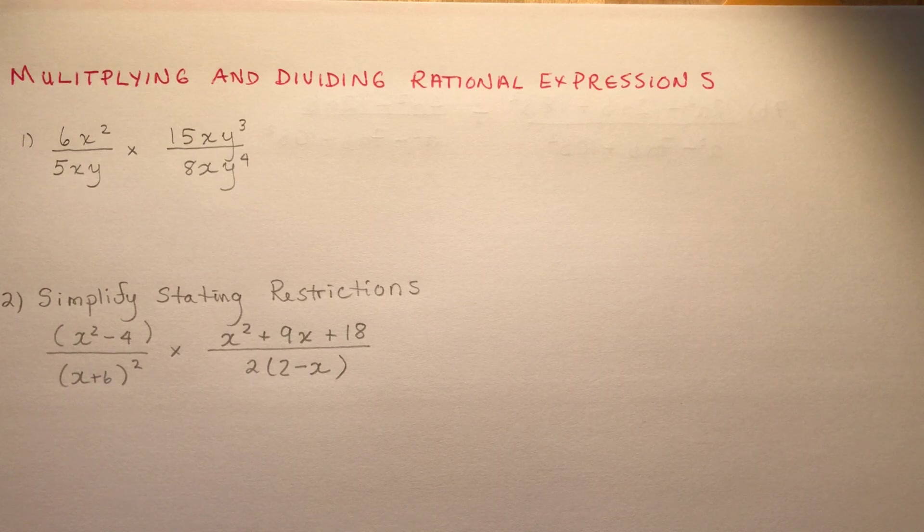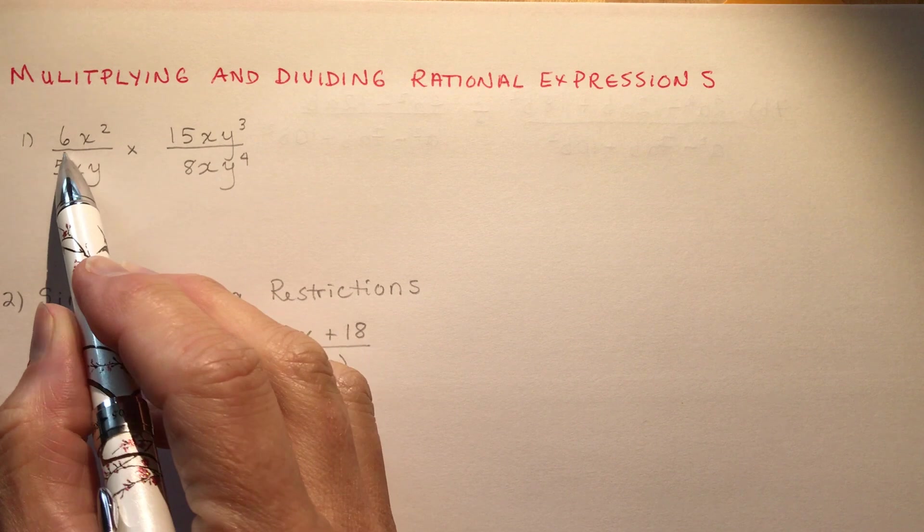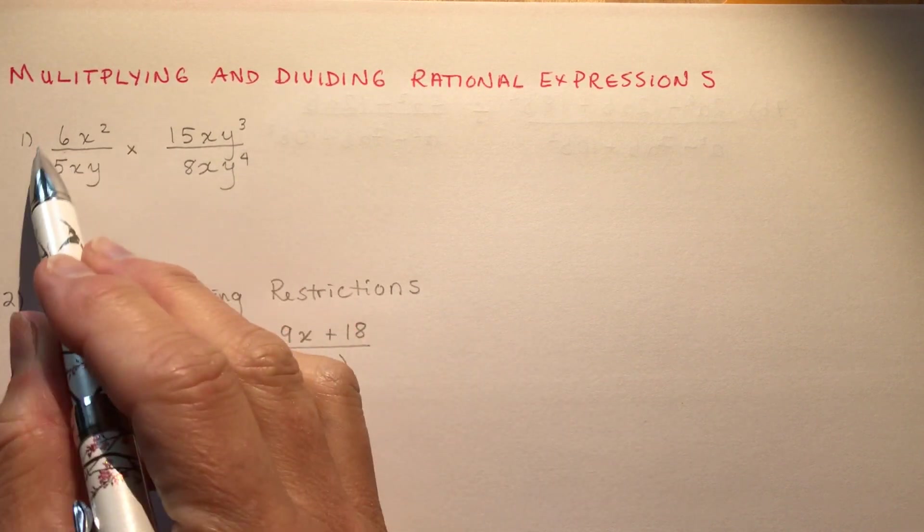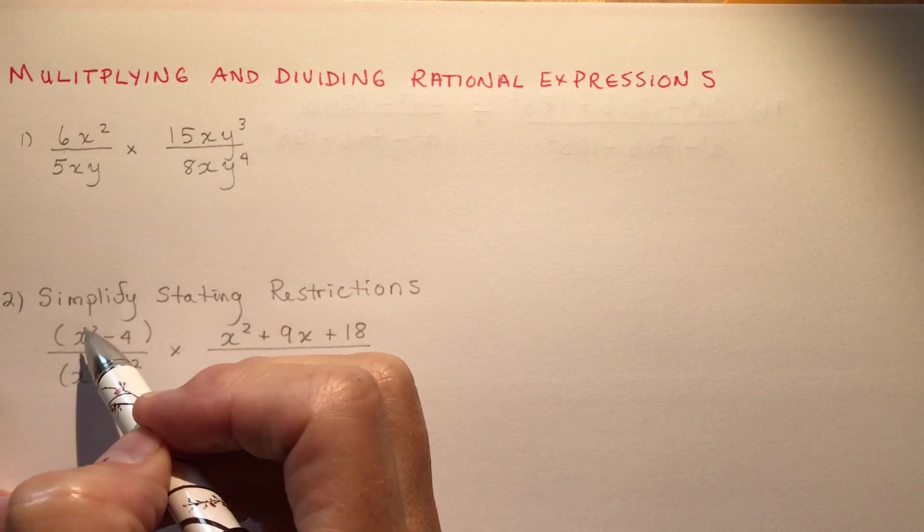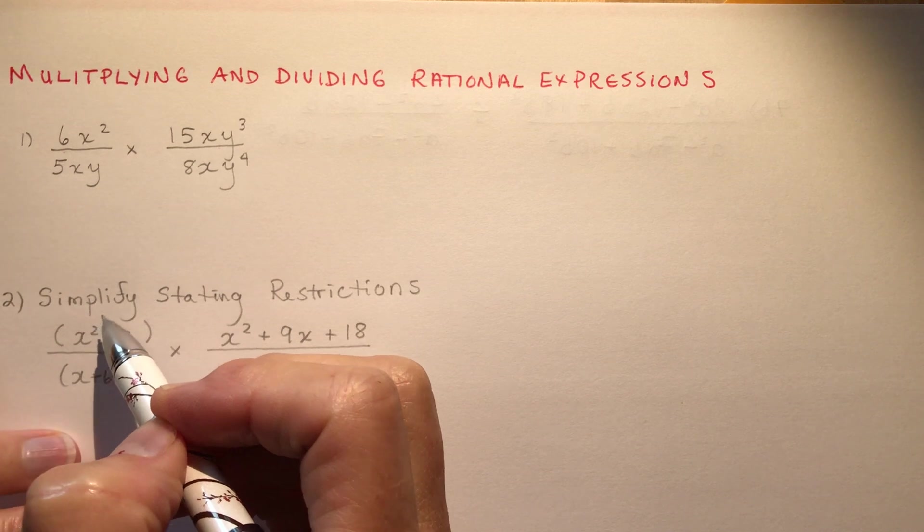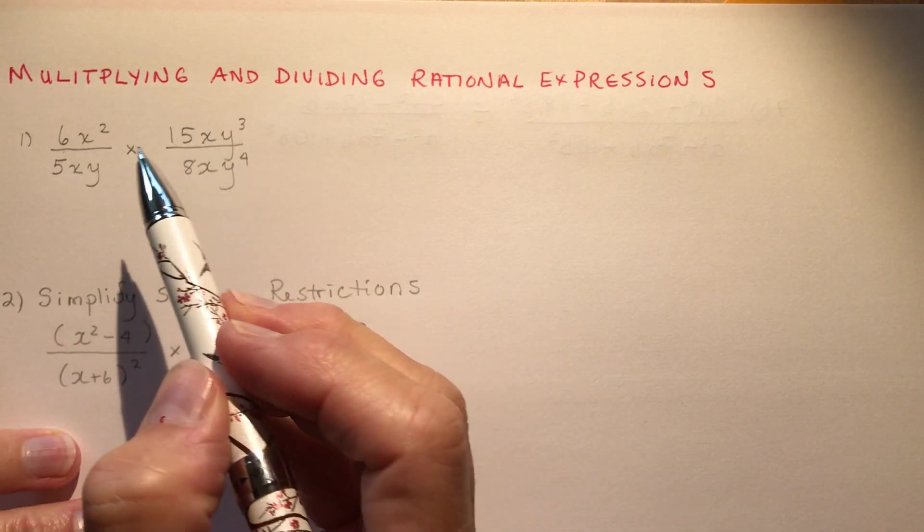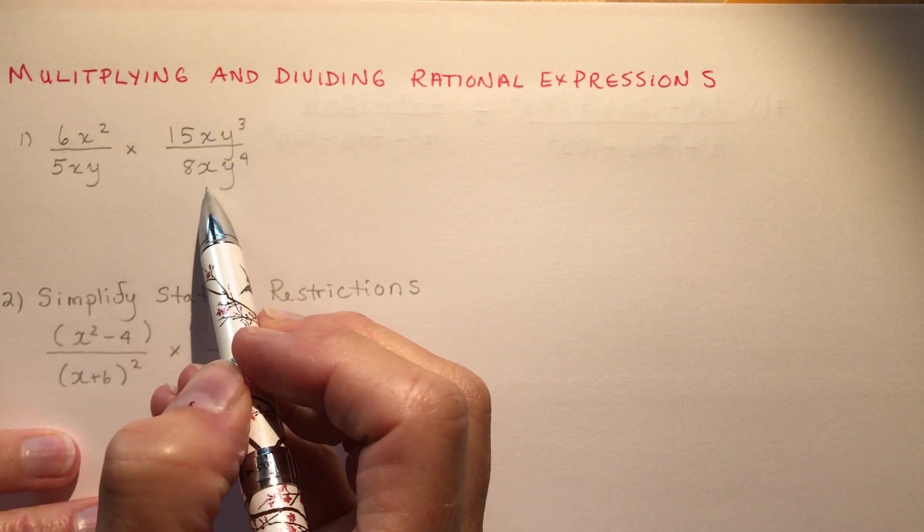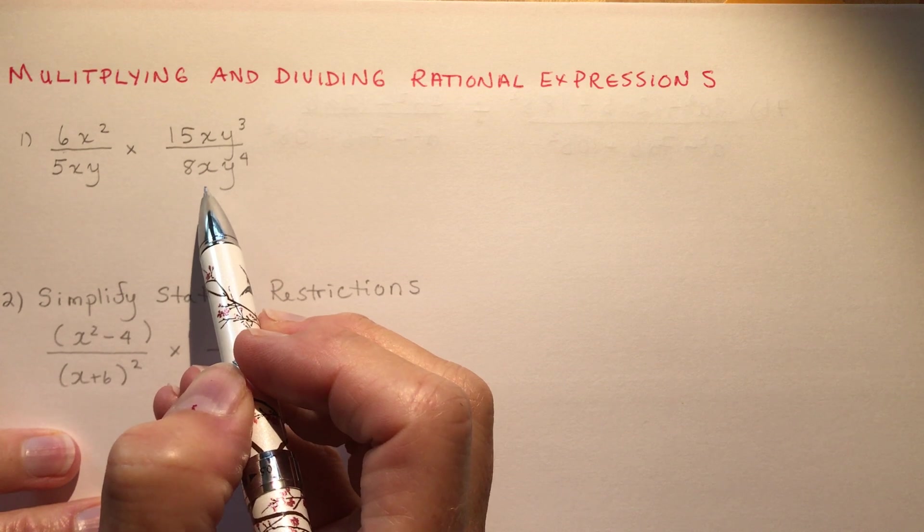So now we're into 2.6, multiplying and dividing rational expressions. It starts off with something pretty basic here. We have these two terms that we want to multiply. If you remember when you multiply fractions, you multiply the tops together, you multiply the bottoms together. It's as easy as that.